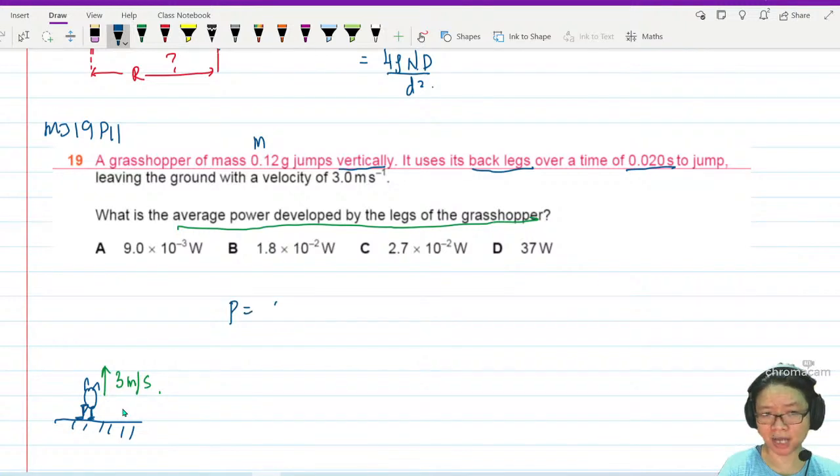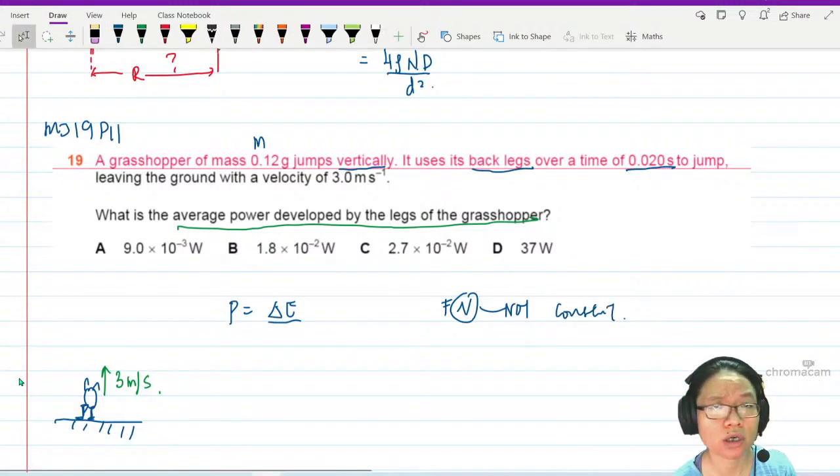Whenever I'm looking for power, I either look for change in energy or I look for FV. In this case, FV is a no-go because this V is not constant. How do you know it's not constant?